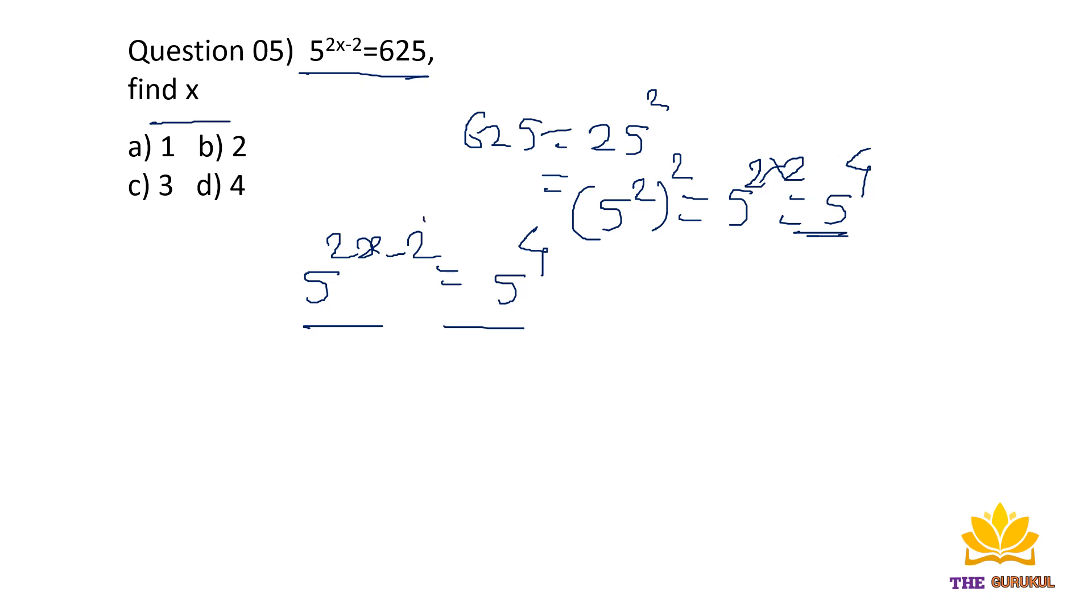So 5 to the power 2x minus 2 equals 5 raised to 4. Since the bases are the same, 2x minus 2 equals 4. So 2x equals 6, and x equals 3. The answer is option c.